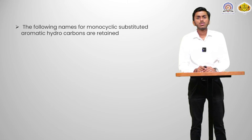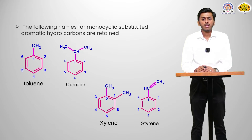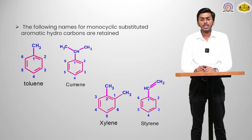The following names of monocyclic substituted aromatic hydrocarbons are retained: toluene, cumene, xylene — with two methyl groups attached to benzene at positions one and two — then styrene, where an ethene-type molecule is attached to benzene, and toluene, which is also known with one methyl group attached to the benzene ring.